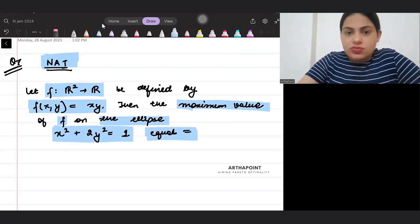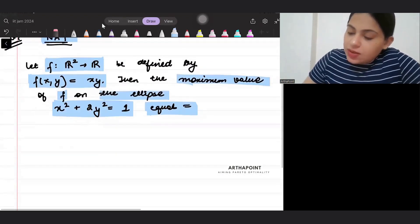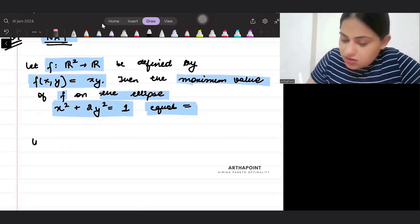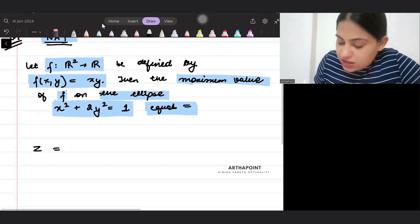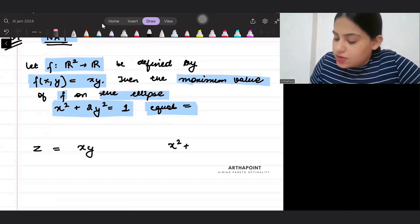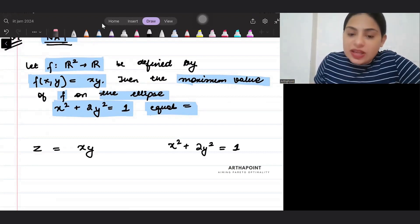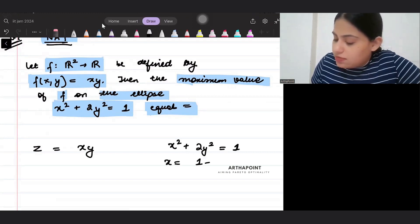There are two ways to solve this question. Let us go ahead and let us look into the first way. So the first technique to solve this question is the following: your function z is equal to x y and you're given that x square plus 2 y square is equal to 1. So from here, what will be x? x will be 1 minus 2 y square under root.